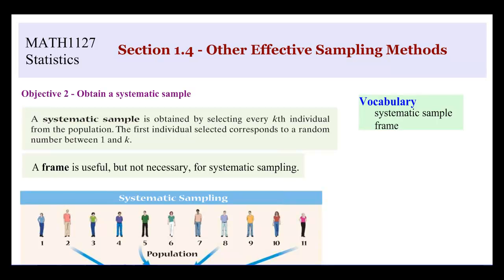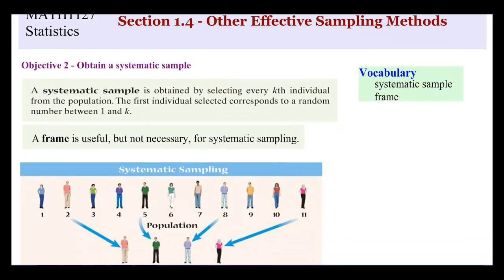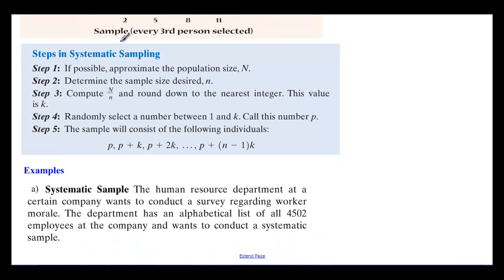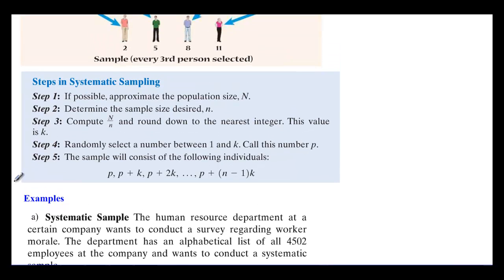Let's talk about a systematic sample. A systematic sample is obtained by selecting every kth individual from the population. The first individual selected corresponds to a random number between 1 and k, and a frame is useful but not necessary. The steps are: determine the population size, determine the desired sample size, then compute k by dividing the population size by the sample size and rounding down to the nearest integer. Then randomly select a number between 1 and k — that's your starting point p. You then add k to that number to get the next person to sample.